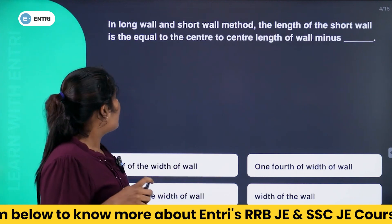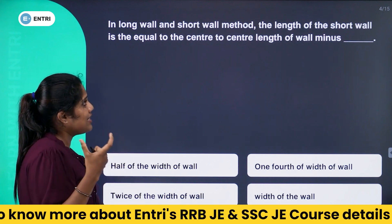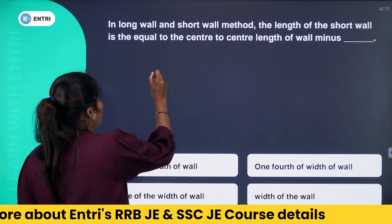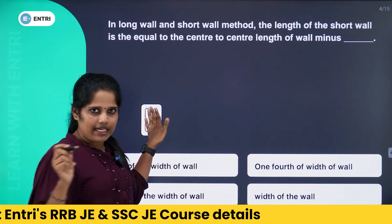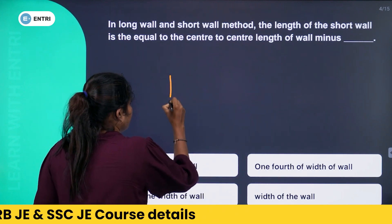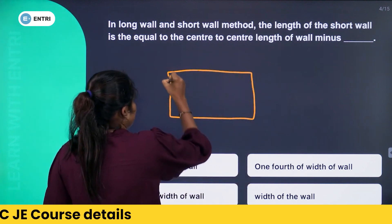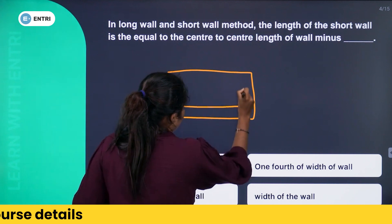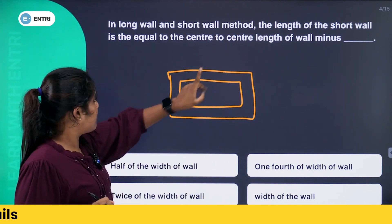The next question. In the long wall and short wall method, the length of the short wall is equal to the center-to-center length of wall minus something. We are looking at the long wall and short wall method, which is an estimation method — unlike the center line method. We have a room structure and we are looking at the length of the short wall.